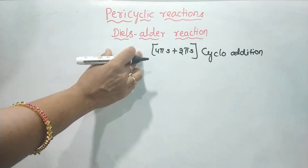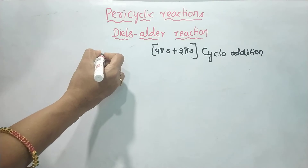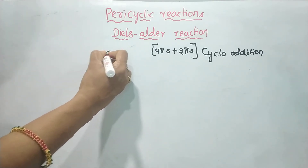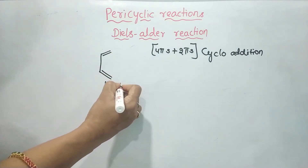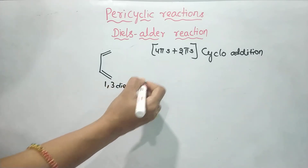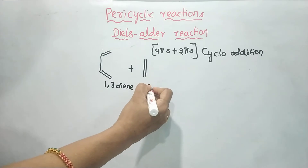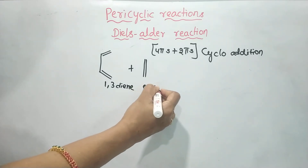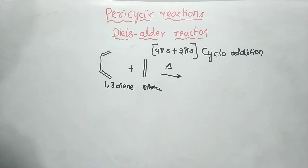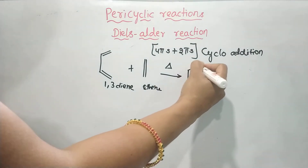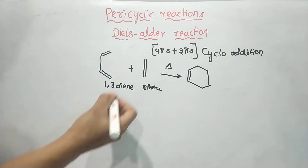We will use a Lewis acid catalyst for this reaction. We will add 1,3-diene plus 1,3-diene in presence of heating, thermal condition. In thermal condition, we will get the product.